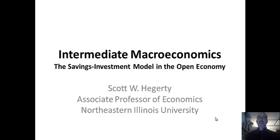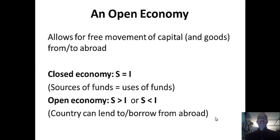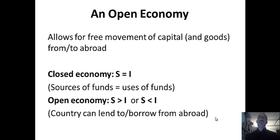First, we're going to define what an open economy is. An open economy allows for free movement of capital to and from other countries. We can talk about openness to trade where goods move back and forth, but in this case we're talking about purely capital movements. We also assume that capital is perfectly mobile, and there's going to be one big market for capital that determines interest rates worldwide — a single world interest rate, as opposed to a national interest rate.